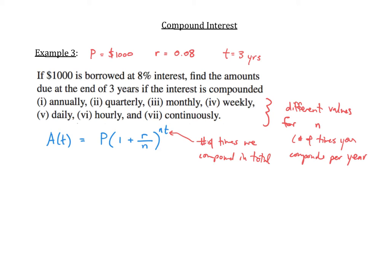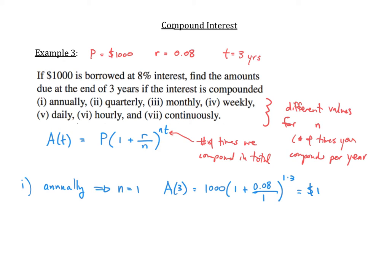Let's take a look at part 1: annually. When you compound annually, that means you compound once per year, so n is equal to 1. The amount we're going to have after three years is given by the principal, which is 1,000, times 1 plus 0.08 divided by 1, raised to the 1 times 3 power. In one year we've only compounded once, so in three years we compound three times total. Plugging this into our calculator, we get $1,259.71.